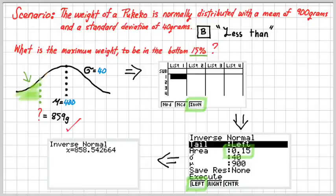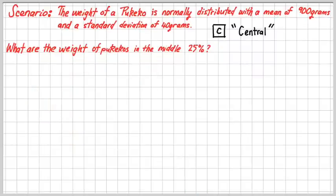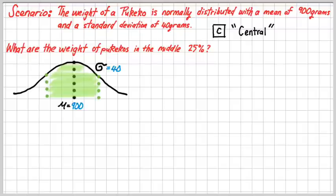We have one more case to consider. The situation is as before. But this time we are going to ask, what are the weight of Pukekos in the middle 25%? Let's have a look at what this looks like. We are looking at the central case here. Our mean of 900, standard deviation of 40.